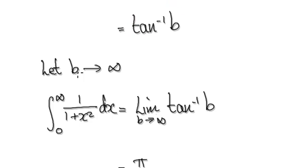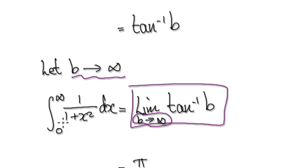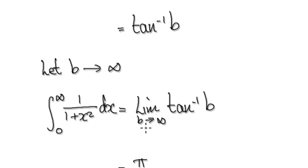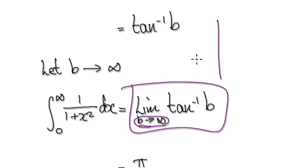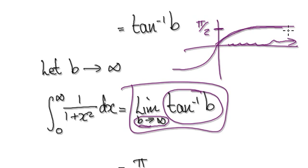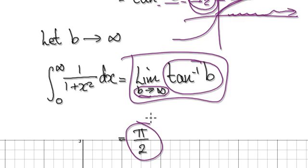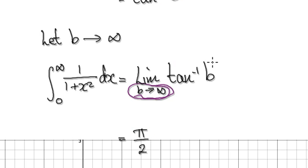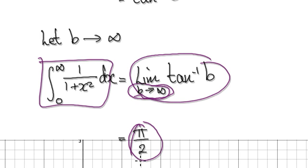Now let b tend towards infinity. The minute you allow b to head towards infinity, you are actually integrating from zero to infinity. What is the limit of arctan(b) as b tends to infinity? If you look at the arctan graph, as x tends to infinity it heads towards the horizontal asymptote, which is pi over two. So this whole thing here will be pi over two.